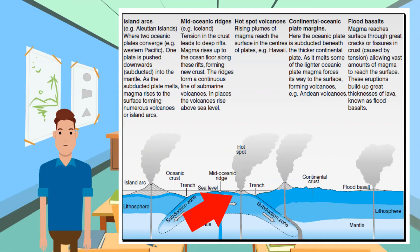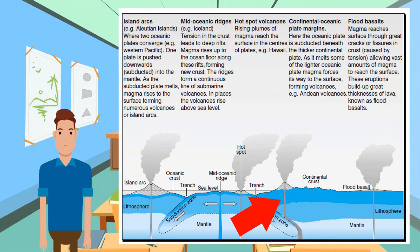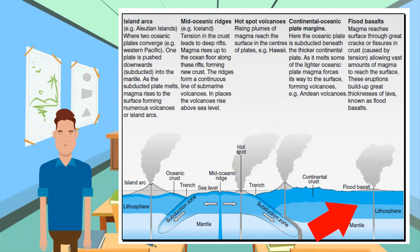Hot spot volcanoes occur where rising plumes of magma reach the surface in the centers of plates — an example is Hawaii. At continental-oceanic plate margins, the oceanic plate is subducted beneath the thicker continental plate; as it melts, magma forces its way to the surface forming volcanoes, for example the Andean volcanoes. Flood basalts occur where magma reaches the surface through great cracks or fissures caused by tension, allowing vast amounts of magma to reach the surface and build up great thicknesses of lava known as flood basalts.